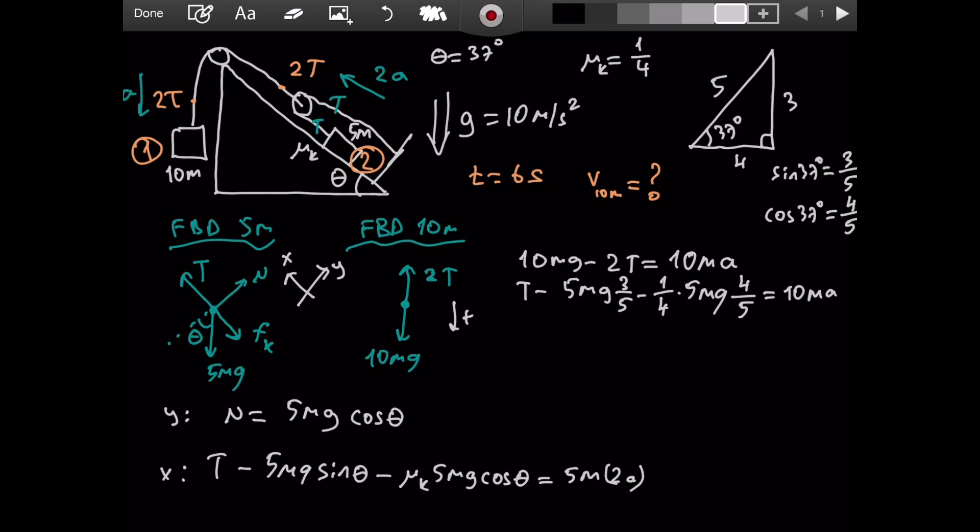Now, I will add these equations side by side, but I want to get rid of the tension, because it is an unknown. We can easily get rid of it by multiplying the second equation by 2. So, we have 2, 2, 2, and this becomes 20. Now, we can add them up. As we just hoped, 2T's cancel. That was our goal. That's nice. So, we have 10mg. And then, let's see. These 5s cancel. So, we have minus 6mg. Here, these 5s cancel. These 4s cancel. So, minus 2mg equals 20 plus 10, 30ma.